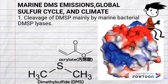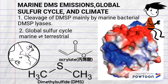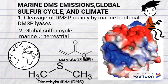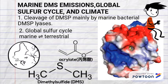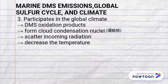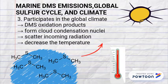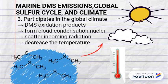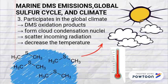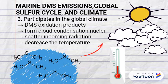DMS is produced through the cleavage of DMSP, mainly by marine bacterial DMSP lyases. DMS emission is a key step in the global sulfur cycle, as DMS is the gaseous sulfur compound needed to enable the steady-state flow of sulfur between marine and terrestrial environments. It has been postulated that the link between DMS generated by biological communities and sulfate aerosols acting as cloud condensing nuclei — reducing the amount of sunlight that reaches the Earth — could decrease the global mean temperature.